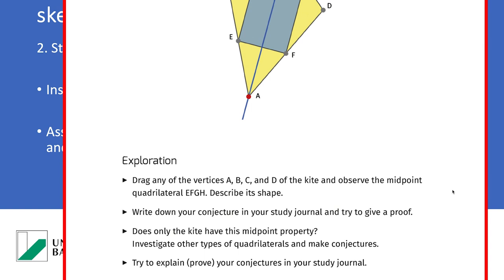In this case, they should drag the vertices of the kite and observe the midpoint quadrilateral. They have to describe the shapes. Of course, in this illustration, in this picture, it seems to be a rectangle. And that's important. It seems to be a rectangle. This is only an observation. The next step is to write down this conjecture in the student's journal or in a textbook or worksheet.